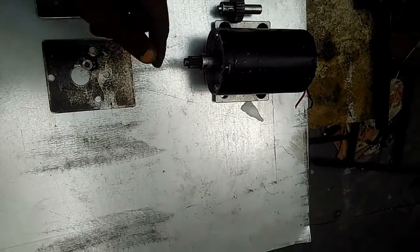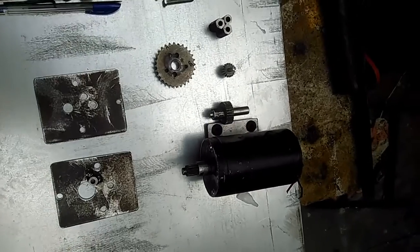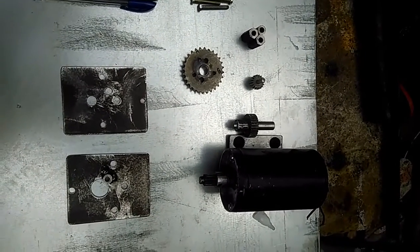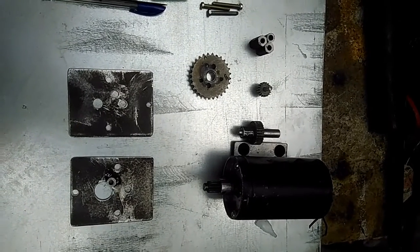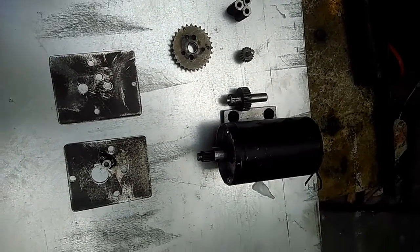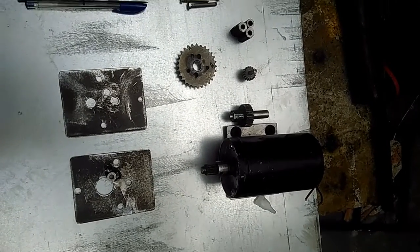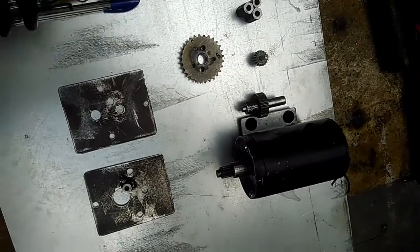This gearbox is intended to be used to operate a rolling gate, an automatic rolling gate operated by remote. The gate is about 80 kgs and 1.5 meter wide.